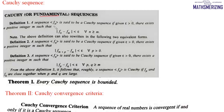The first definition: a sequence {fn} is said to be a Cauchy sequence if for any epsilon greater than zero, there exists a positive integer m such that |fn minus fm| is less than epsilon for all n greater than or equal to m.